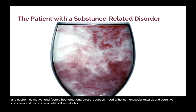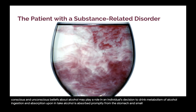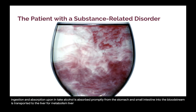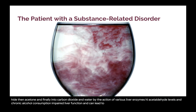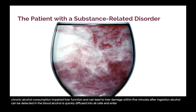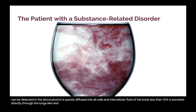Metabolism of alcohol — ingestion and absorption: upon intake, alcohol is absorbed promptly from the stomach and small intestine into the bloodstream and is transported to the liver for metabolism. More than 90 percent of ingested alcohol is converted into acetaldehyde, then acetone, and finally into carbon dioxide and water by the action of various liver enzymes. High acetaldehyde levels and chronic alcohol consumption impair liver function and can lead to liver damage. Within five minutes after ingestion, alcohol can be detected in the blood and is quickly diffused into all cells and intercellular fluid of the body. Less than 10 percent is excreted directly through the lungs, skin, and kidneys.